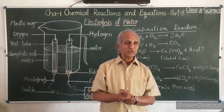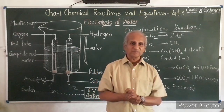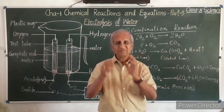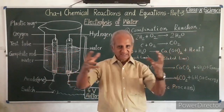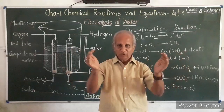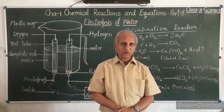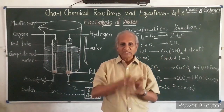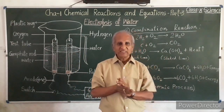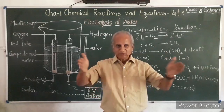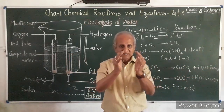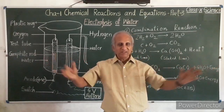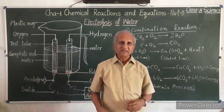What are those four different kinds of chemical reactions? Some of you might have gone through the textbook already. One is chemical combination — two or more substances come together, they all combine with each other, and a new substance gets formed. As opposed to that we have chemical decomposition — one substance is there, it gets divided into two or more substances.